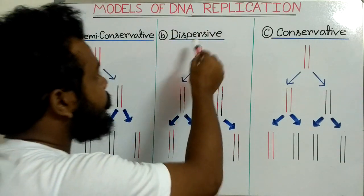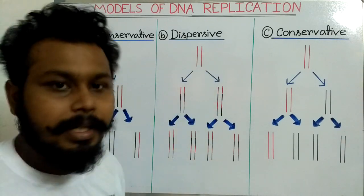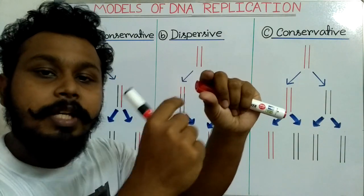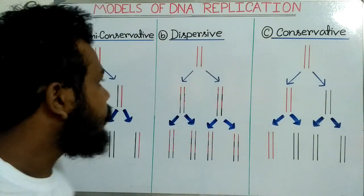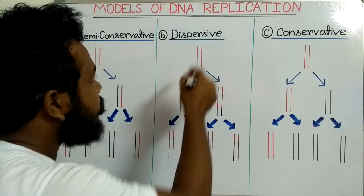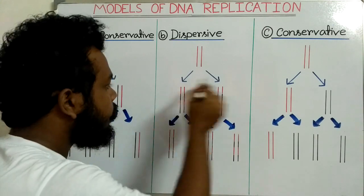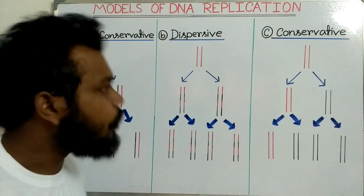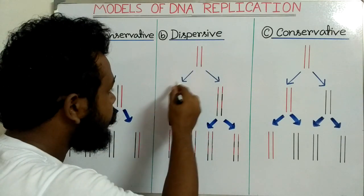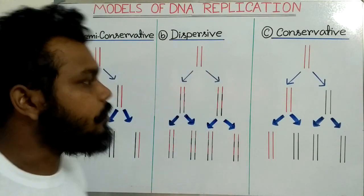In the dispersive model, the parental DNA first makes copies of small segments, and then all the small segments of parental DNA and all the new copied segments are mixed up with each other to make a mixture in the whole DNA molecule. So segments of parental DNA and segments of new copied DNA are all present in both new DNA molecules. It is called the dispersive model because the parental DNA is dispersed throughout the new DNA molecules.